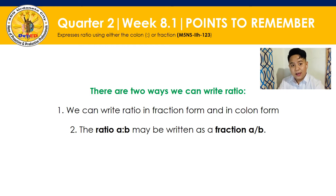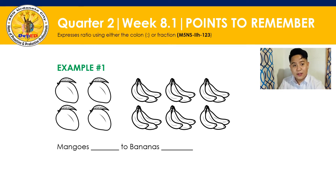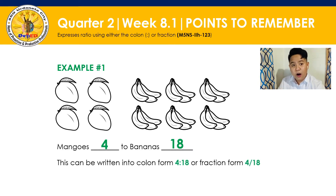For us to really understand this, let's take a look at some examples. First example, we have mangoes and bananas. How many mangoes do we have here? We have 4. How many bananas do we have? We have 18 bananas. The ratio is 4 mangoes to 18 bananas. We can write this ratio in colon form: 4 to 18. And we can also write this in fraction form: 4 over 18.